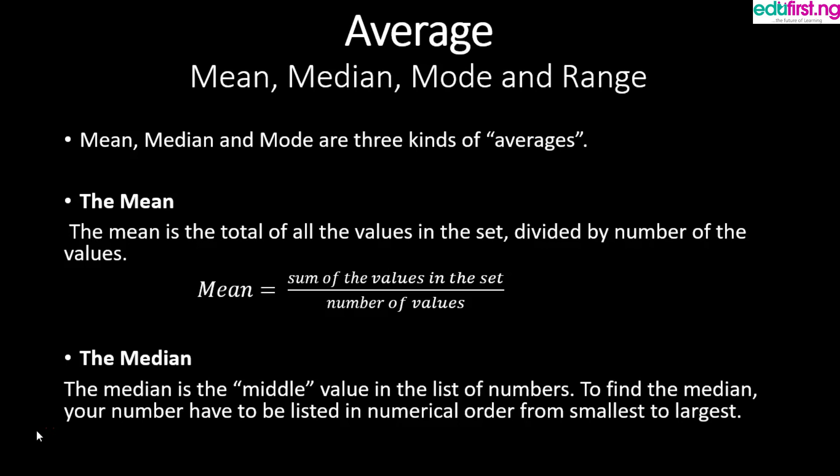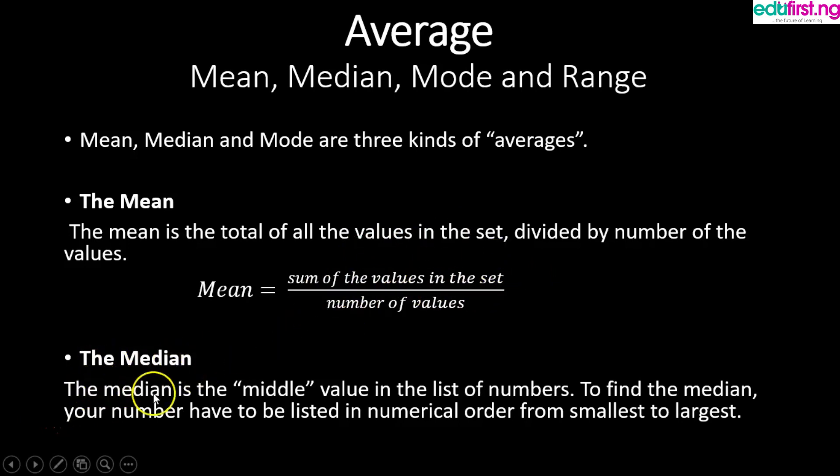The mean is the total of all the values in a set divided by the number of values. The formula to find the mean is: mean equals the sum of the values in the set divided by the number of values.